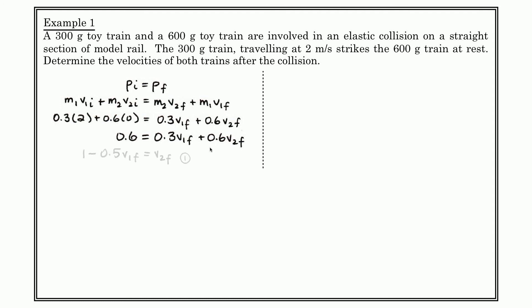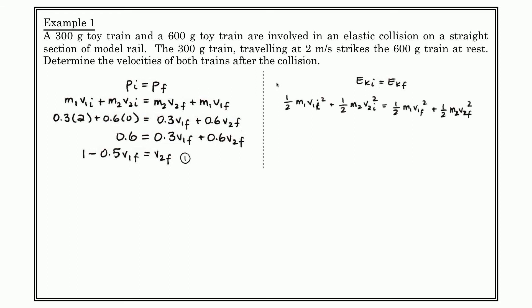With one equation and two unknowns, we look at the conservation of energy. The kinetic energy initially equals the kinetic energy finally — and the reason we can say this is one word: elastic. These two toys undergo an elastic collision. If this had said inelastic, we would not have been able to write this line. So here is the conservation of kinetic energy: ½M1V1i² + ½M2V2i² = ½M1V1f² + ½M2V2f². We substitute in our numbers and arrive at a second equation with the same variables.